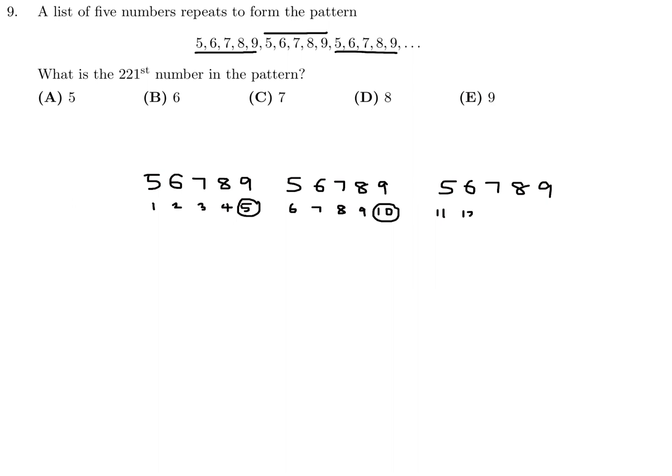Similarly, 11th number, 12th number, 13th number, 14th number, 15th number. If 15 is a multiple of 5, it's a 9 again. So if we keep going all the way to 220, the 220th number will also be a 9. It will be part of that 5, 6, 7, 8, 9. And 220 is a multiple of 5. That's why I'm confident it's going to be a 9. Well, they want the 221st number. That's the very beginning of the 5, 6, 7, 8, 9 pattern again. So the 221st number will be a 5. Number 9, the answer is A.